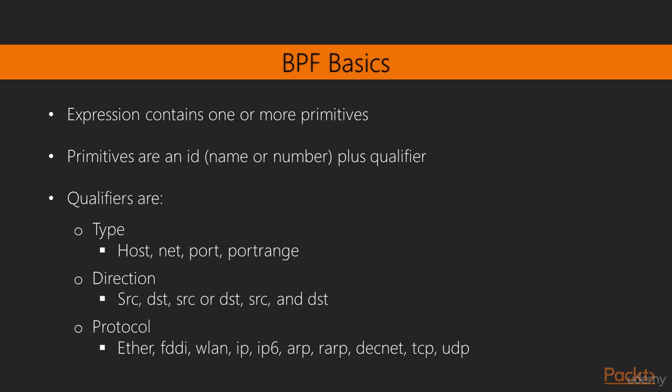In order to write BPF, we need to create an expression, and an expression contains one or more primitives. In BPF, primitives are an ID — such as a name or number, an IP address, an Ethernet address, something like that — plus a qualifier. A qualifier has three pieces to it: the type, the direction, and the protocol.